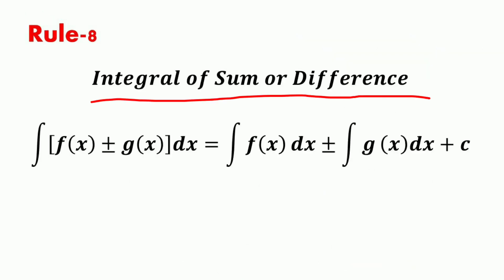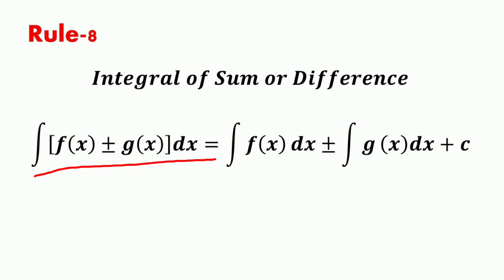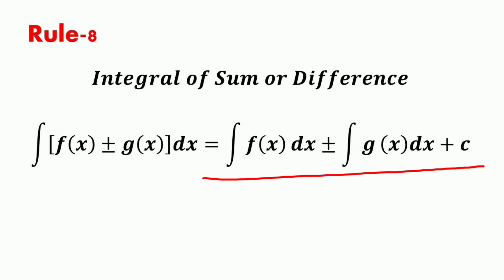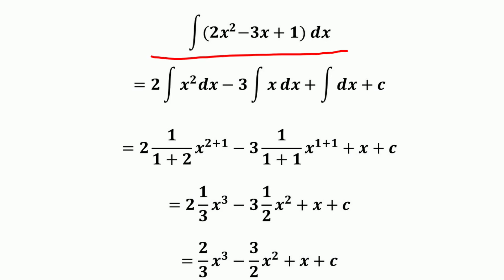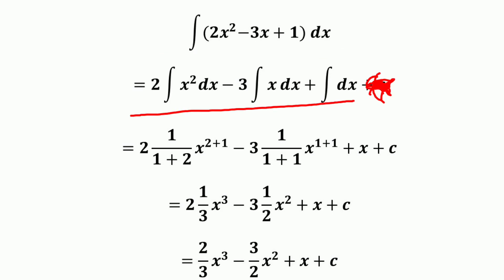The next rule is the integral of a sum or difference. The integral of the sum or difference of two functions is the sum or difference of their integrals. That is, the integral of [f(x) ± g(x)] dx equals the integral of f(x) dx plus or minus the integral of g(x) dx plus c. For example, the integral of (2x² − 3x + 1) dx is evaluated by taking each term separately.